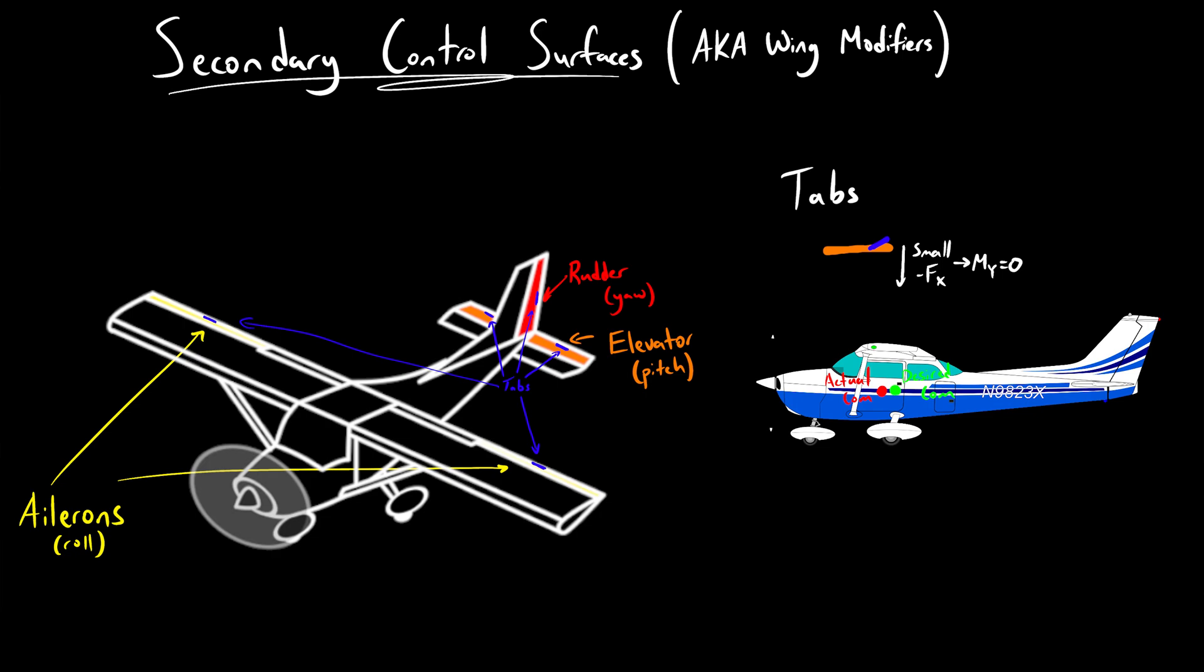These small tabs are located within the primary control surfaces, but are actuated independently from the surface. If a plane has extra weight in the front, the pilot can use the trim tabs in the elevator to reduce the lift in the tail and prevent the plane from pitching down.